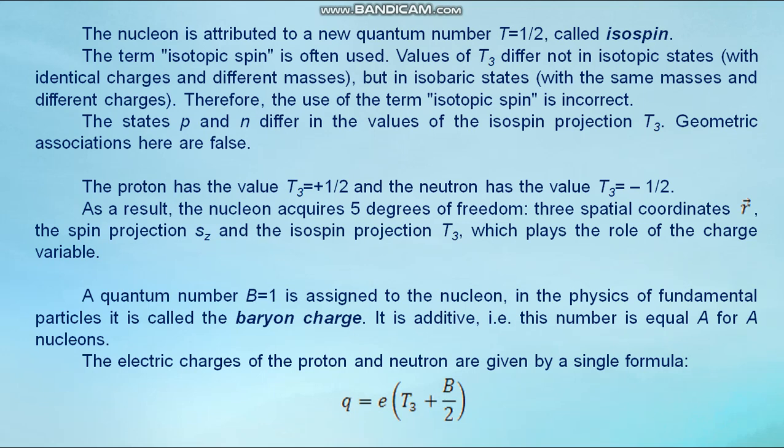As a result, the nucleon acquires five degrees of freedom: three spatial coordinates r vector, the spin projection Sᴢ, and the isospin projection T₃, which plays the role of the charge variable.